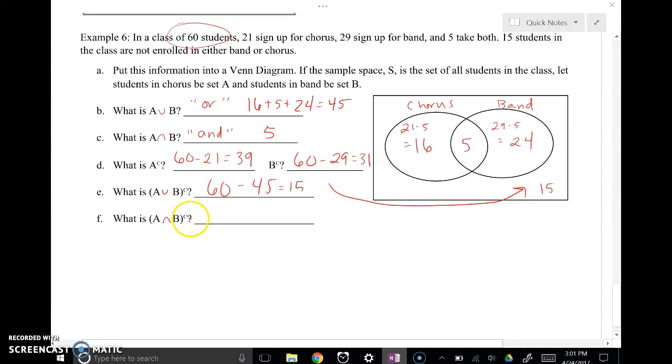How about all the people who are not in both? I got 55, the 5 that are in both right here from the total, 60 minus 5, it's 55.